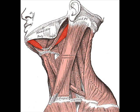When the digastric muscle contracts, it acts to elevate the hyoid bone. If the hyoid is being held in place by the infrahyoid muscles, it will tend to depress the mandible — opening the mouth. Thanks for listening. Goodbye.